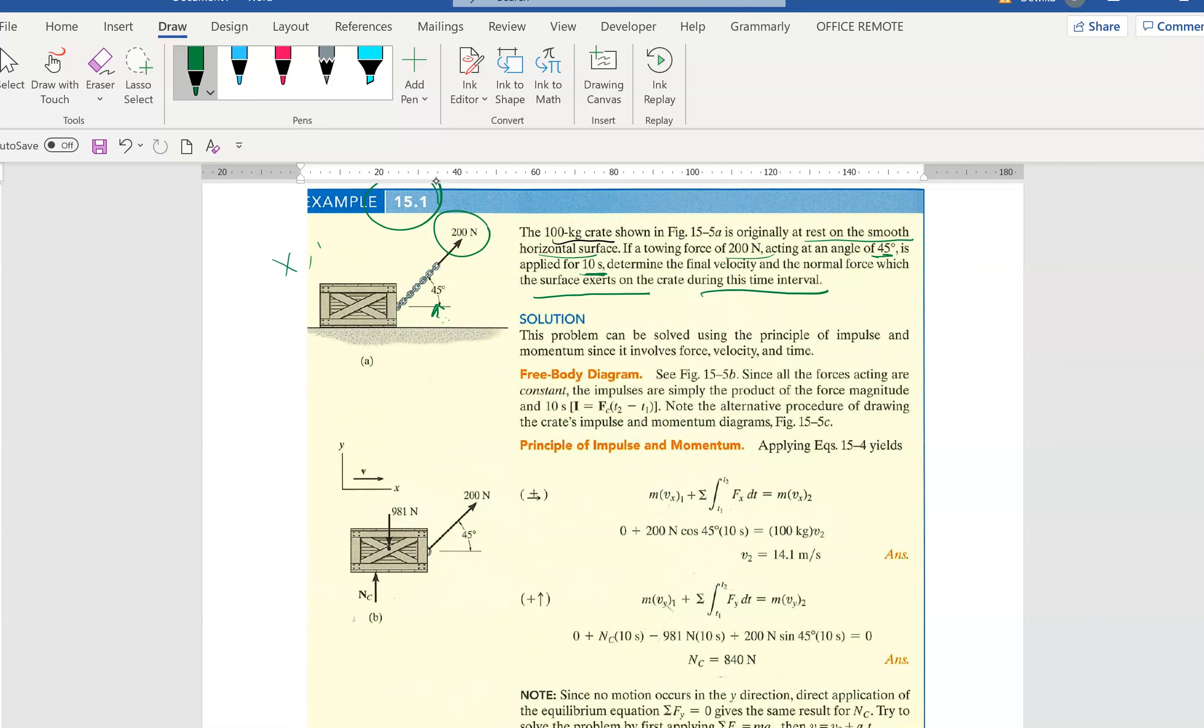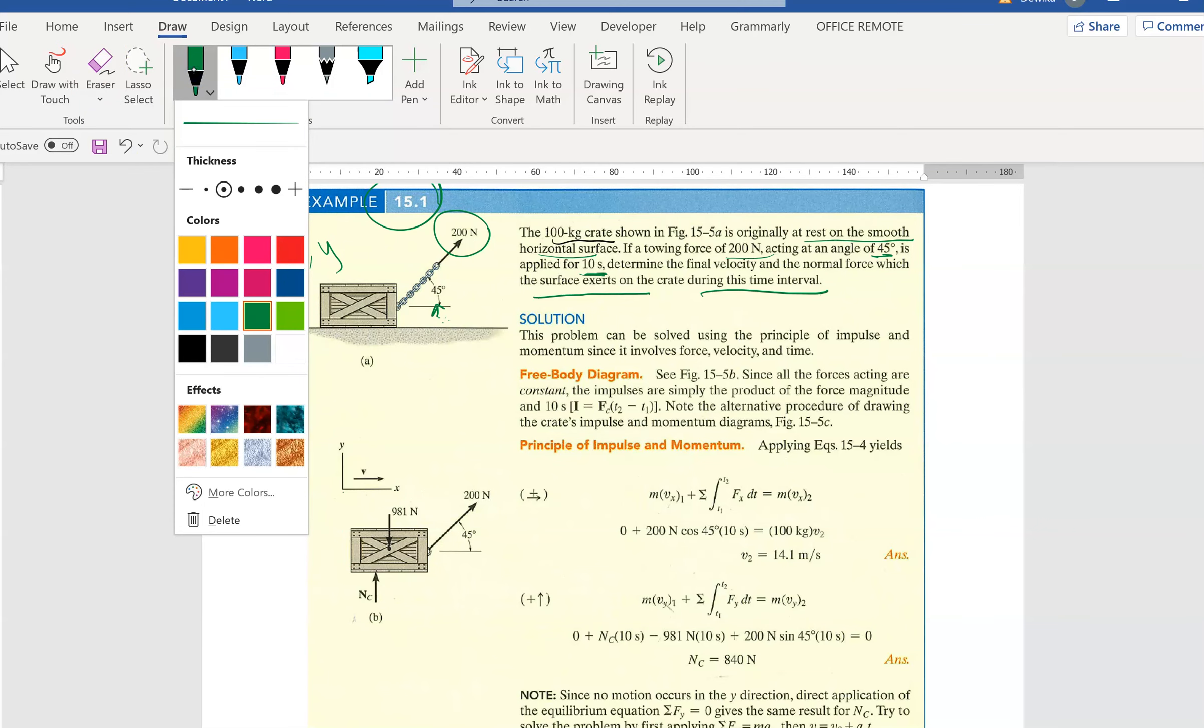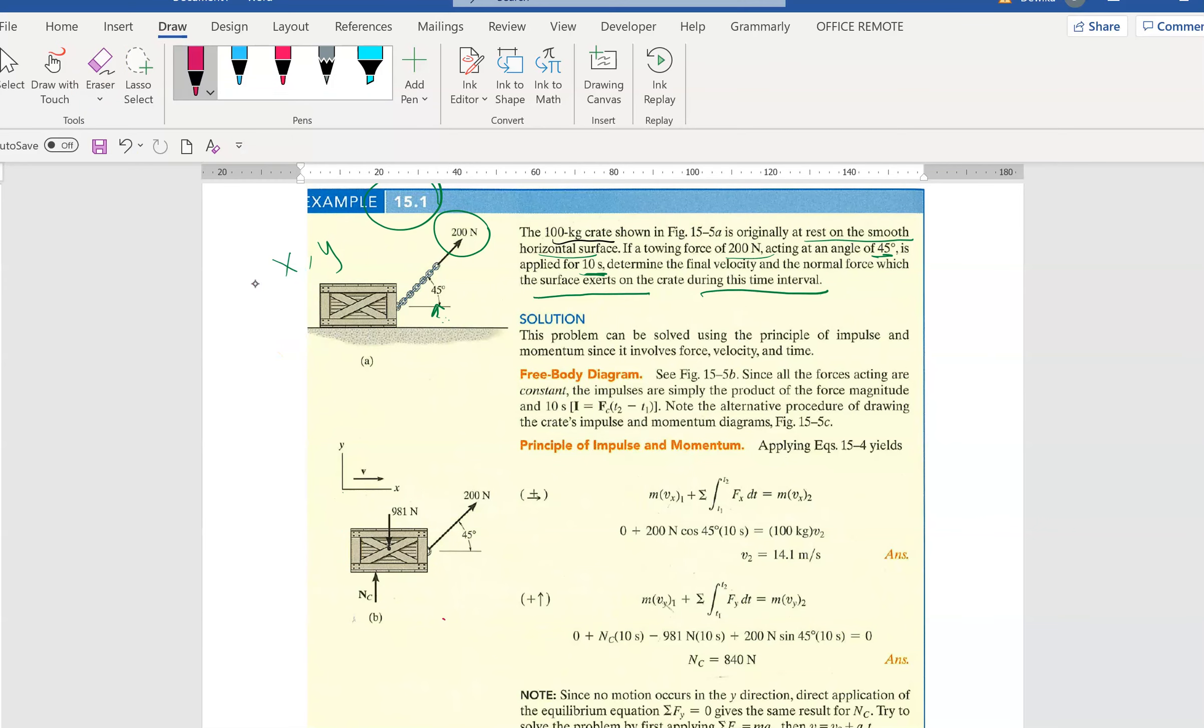The first step is to define the x and y axes. In this case, you only have x and y axes, so don't worry about z-axis. The next step is to draw the free body diagram. Can you see? This is the free body diagram which shows the forces, and this is the diagram which shows the movement, the kinetics. These two diagrams are very important because you need to draw them to define the movement. Otherwise, it's very difficult.